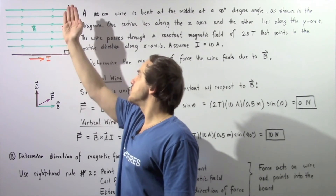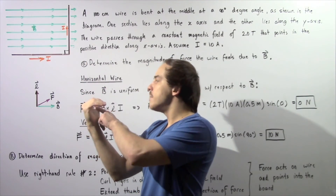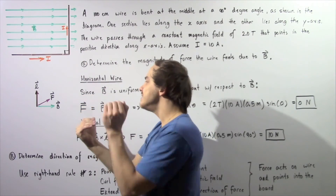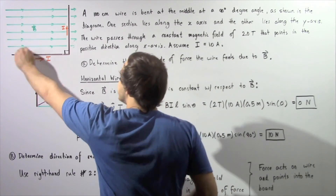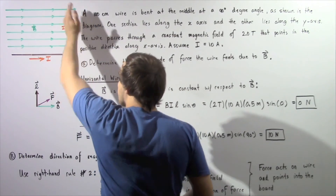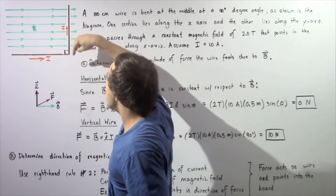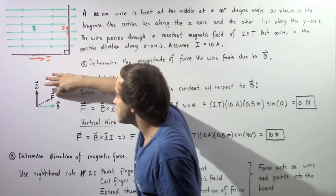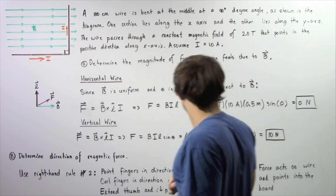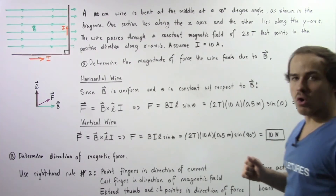The electric current points upward, the magnetic field points along the x-axis, and when we extend the thumb it points inward into the board — at a 90 degree angle with respect to both the magnetic field lines and the electric current. So the force acts with a magnitude of 10 Newtons and points inward into the board.